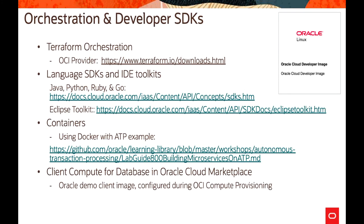For orchestration and developer SDKs, Terraform orchestration is available with an OCI provider that can be downloaded from the Terraform URL. Language SDKs and IDE toolkits cover the concepts and how to use the APIs. There is also a Docker with ATP examples on GitHub showing how to build microservices using Autonomous Database.